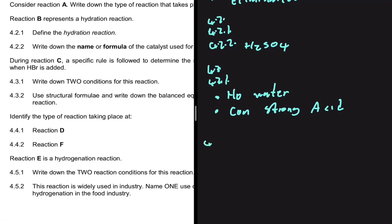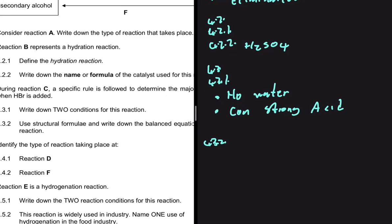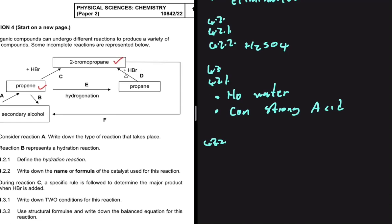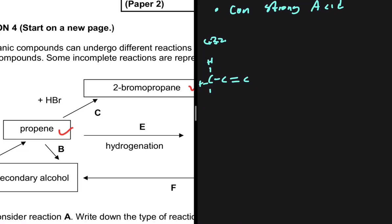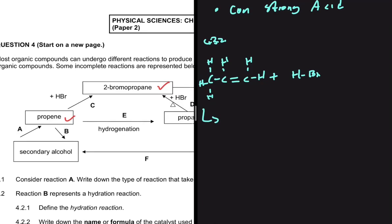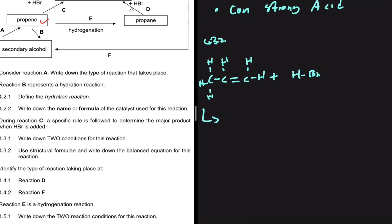For 4.3.2, use structural formulae and write the balanced equation for this reaction: propene plus HBr. We draw three carbons with their hydrogens. Looking at the equation, during reaction C a specific rule is followed to determine the major product when HBr is added, so you need to know that rule.